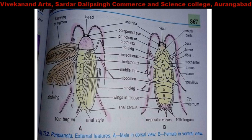The abdomen part has segments. The abdominal portion is the posterior part of the body. This is all about the structure of Periplaneta americana, which is commonly called the cockroach.